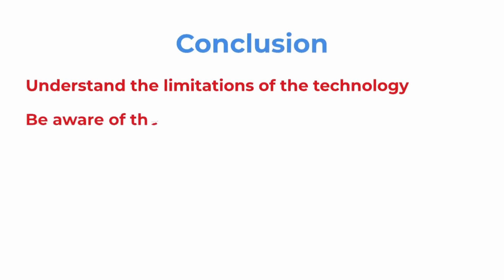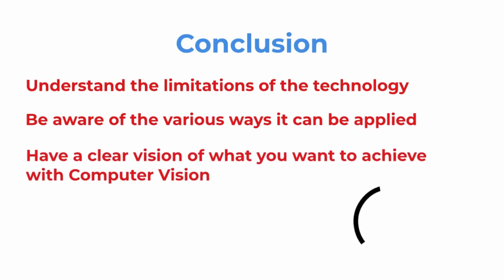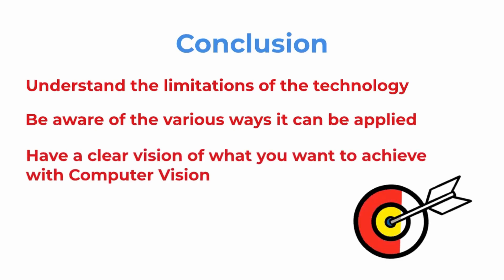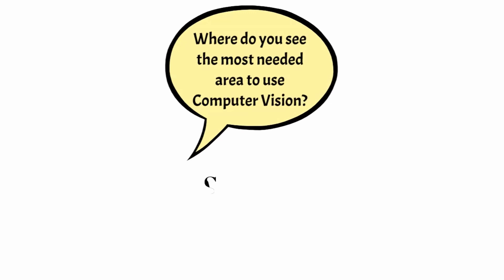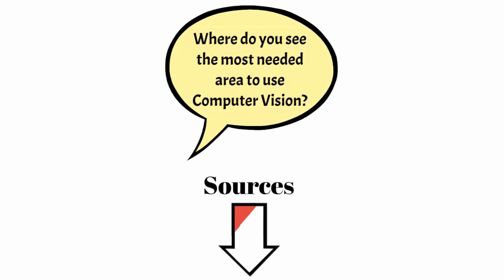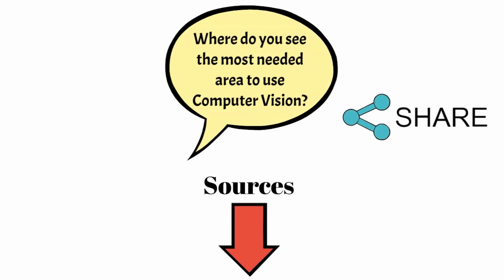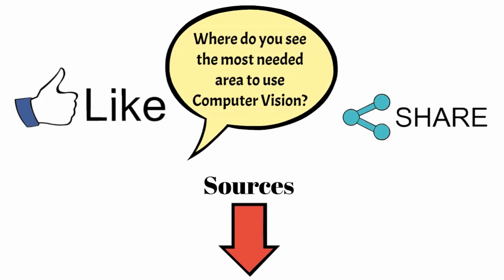In conclusion, to use computer vision most effectively, one should understand the limitations of the technology and be aware of the various ways it can be applied. It is important to have a clear vision of what you want to achieve and be patient when implementing it. Always test and evaluate your results to ensure you are achieving the desired outcome. Where do you see the most needed area to use computer vision? Leave a like, comment, subscribe, and share it with friends who want to improve their programming skills.